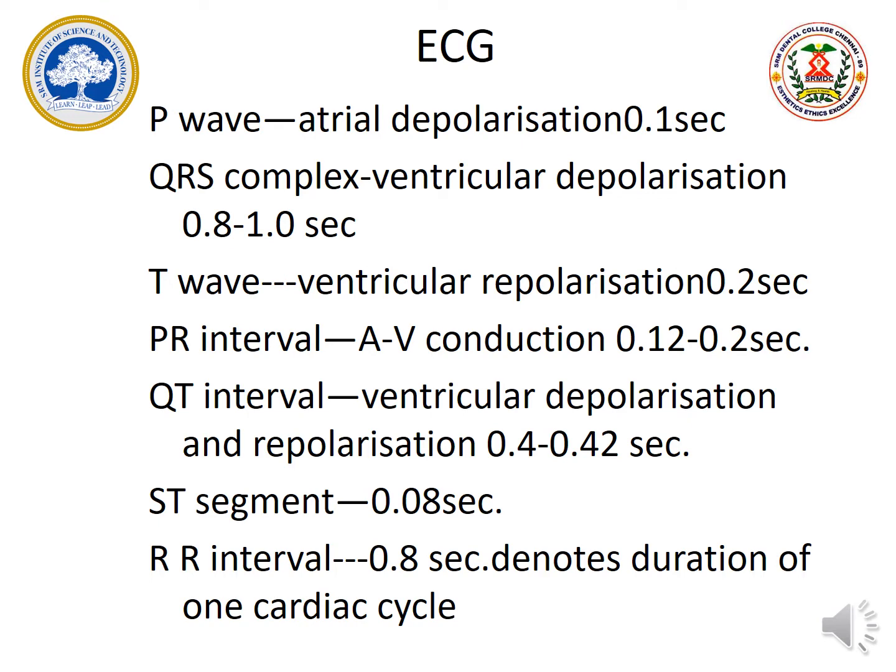One of the waves recorded is the P wave, QRS complex, and T wave. Based on these waves, we are going to conclude what kind of muscle activity is happening. The muscle activity is recorded with the help of an action potential created in the cardiac muscle.